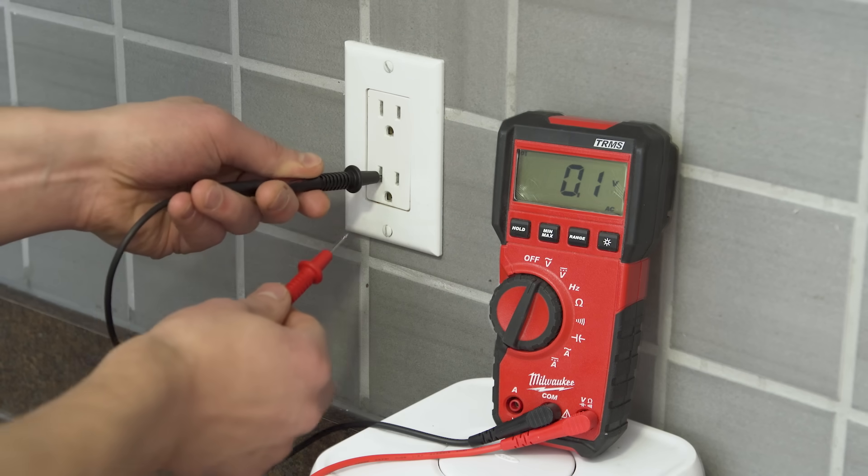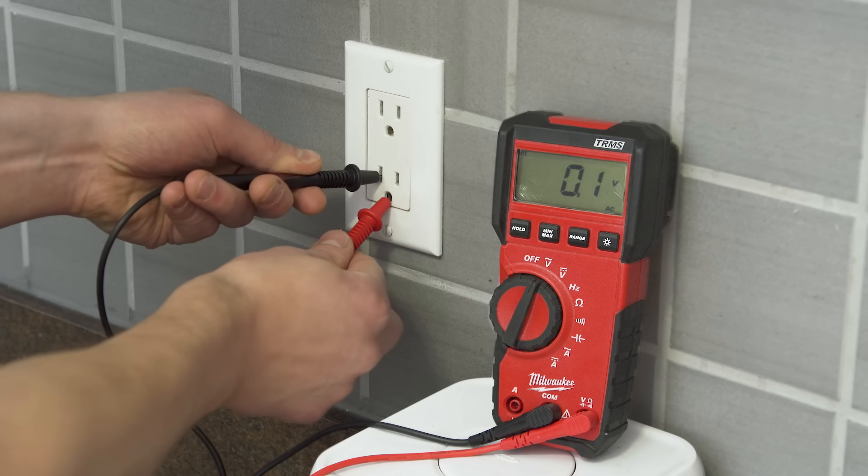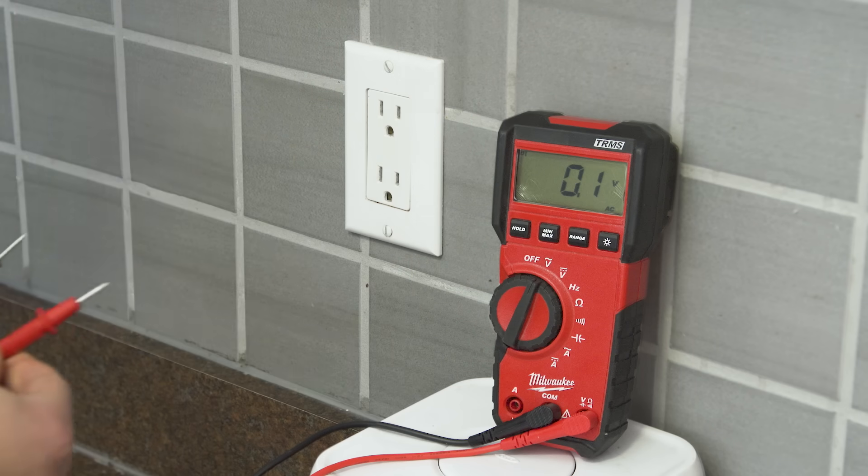When testing from neutral to ground, there should be no significant reading. If there is a 120 volt reading, then the receptacle might not be wired correctly, or there could be a short in the circuit.